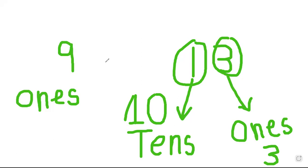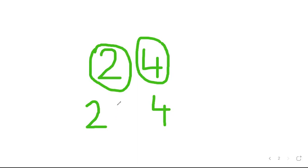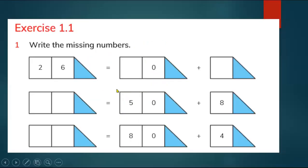Now let's look at another example. Here we have 24. How many ones? We have four ones. How many tens? We have two tens. Don't forget to add zero in tens — we have to add a single zero. So 20 plus 4 makes 24. Four ones and two tens make 24.